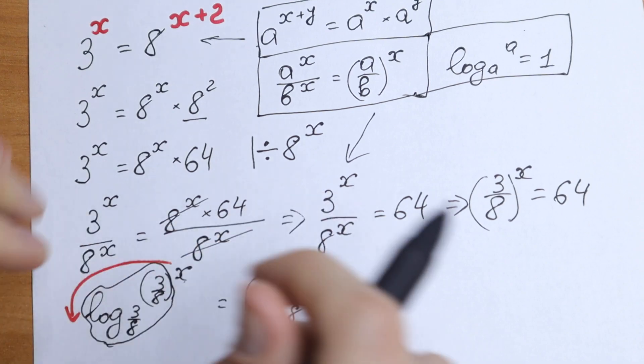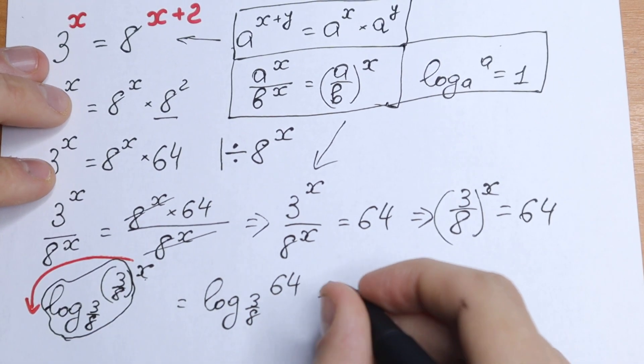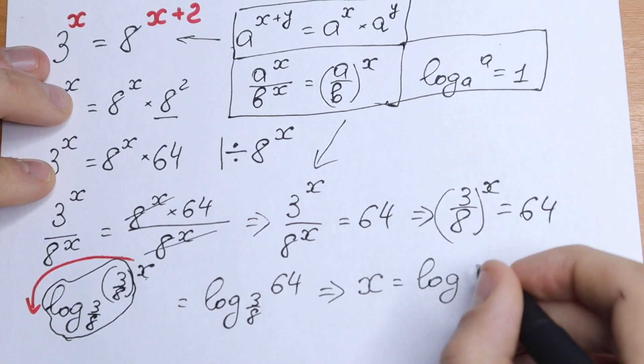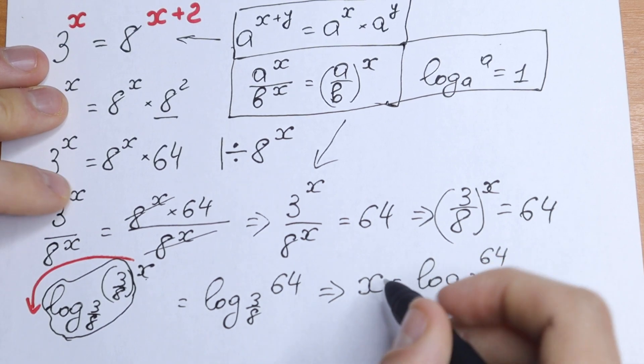As a result we will have that only our x on the left equal to log 64 base of 3 over 8, and this will be our answer.